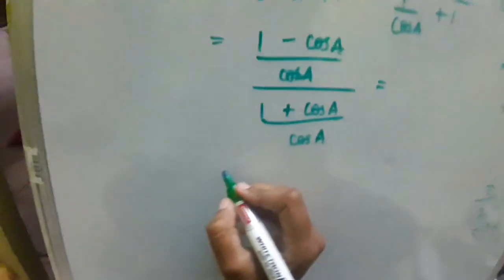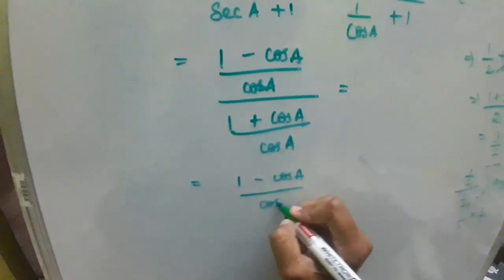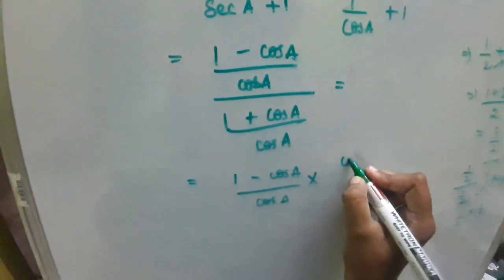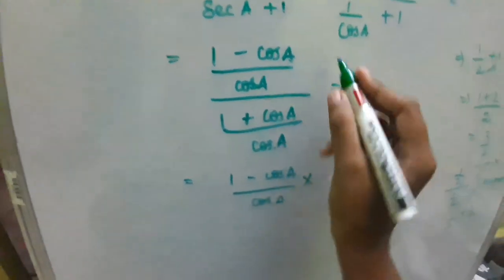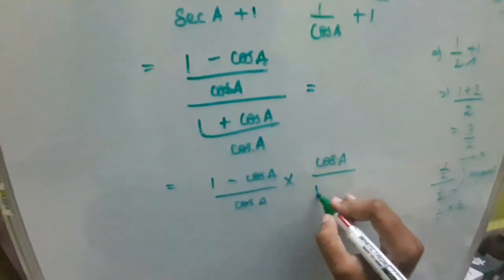It is a similar thing here. I am writing it down: 1 minus cos A divided by cos A into cos A. This denominator cos A will go up and this will go down. So, 1 plus cos A.